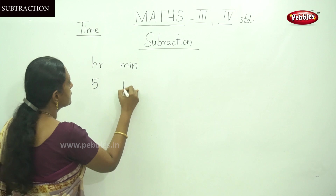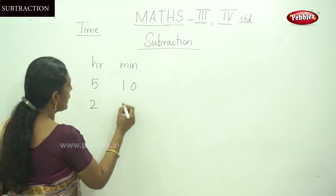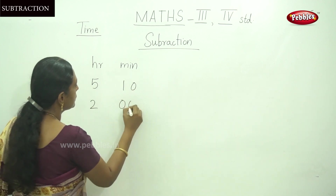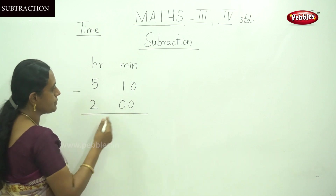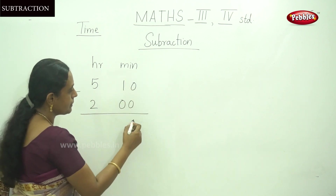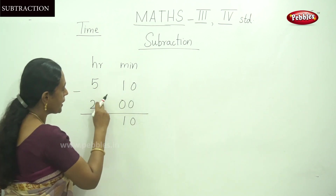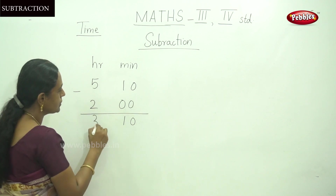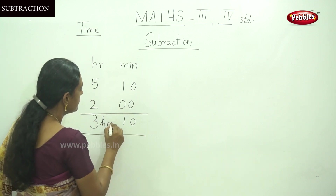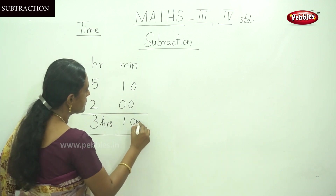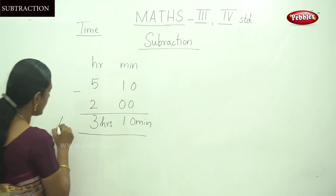That is 5 hours 10 minutes minus 2 hours. Here no minutes. That is subtraction means remain this same. That is 0 and 1, and 5 minus 2, that is 3. So the answer is 3 hours 10 minutes.